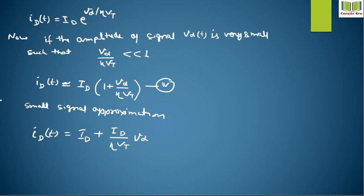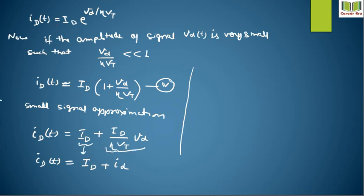IDT equals ID plus (ID / η·Vt) * Vd. The first term ID is the DC current, and the second term (ID / η·Vt) * Vd is the small AC current id. So the AC current id equals (ID / η·Vt) * Vd.